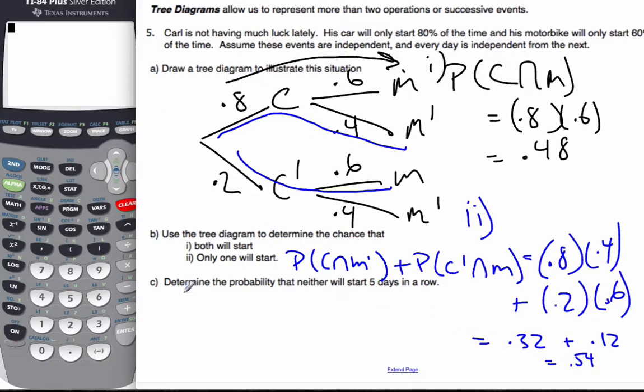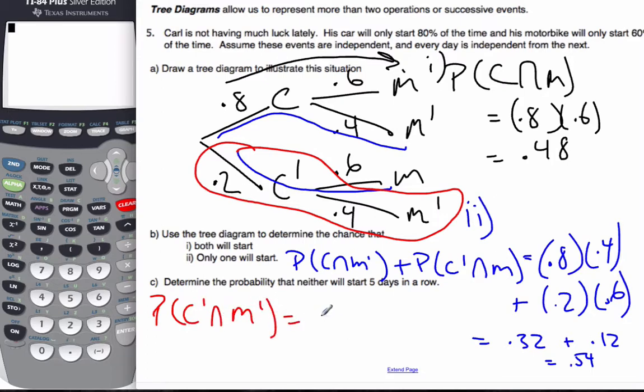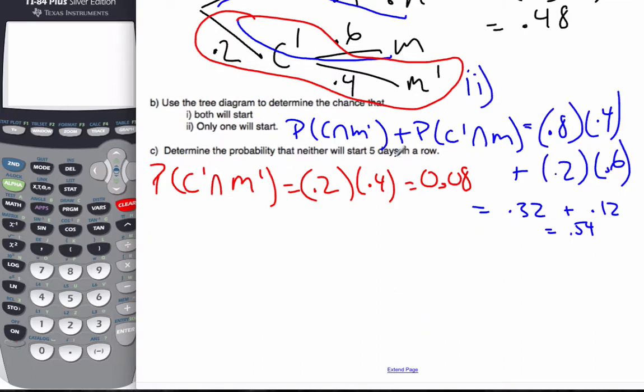And then finally, determine the probability that neither will start five days in a row. Well, here is the last branch here, which is neither starting. So the probability that neither start is 0.2 times 0.4, which is 0.08. Well, the probability that neither will start five days in a row, the first day the probability of that happening is this.